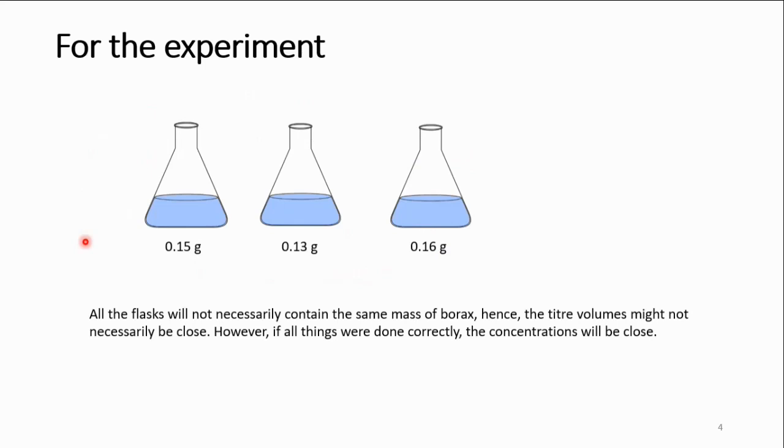So this is what you will do. You'll just get a beaker, and you will put inside that beaker, three times 0.15, 0.45, about 0.45 grams of borax in that beaker, small beaker, maybe a 100 ml beaker or something like that.